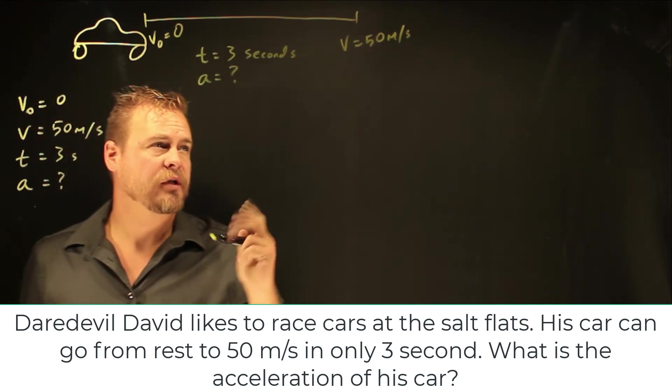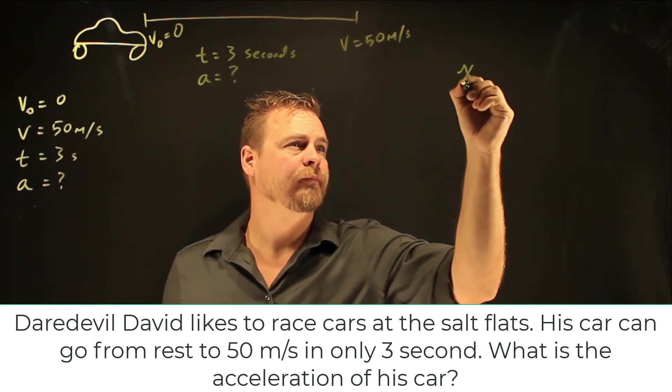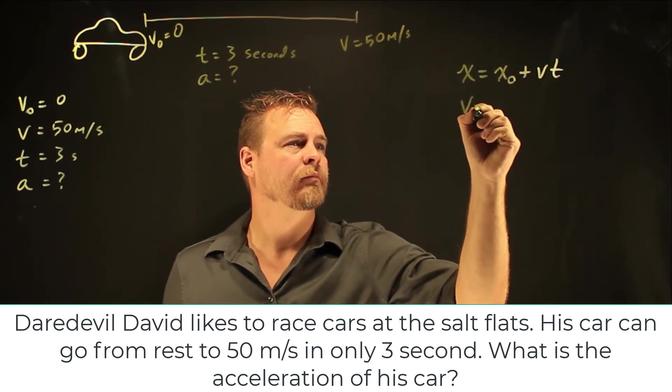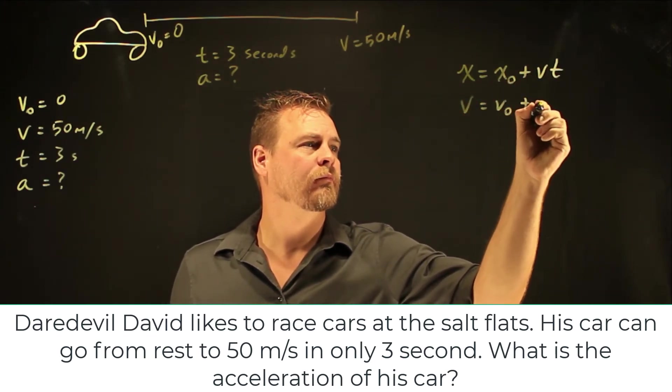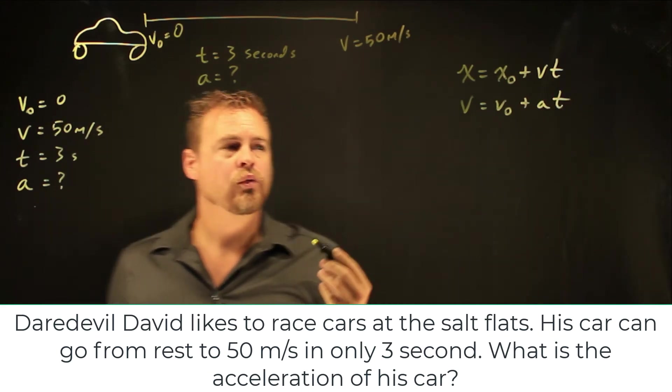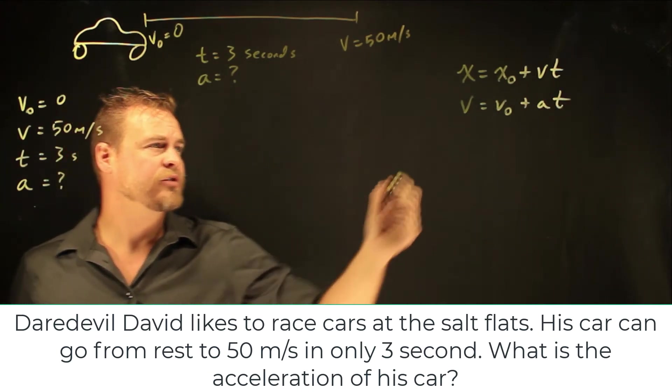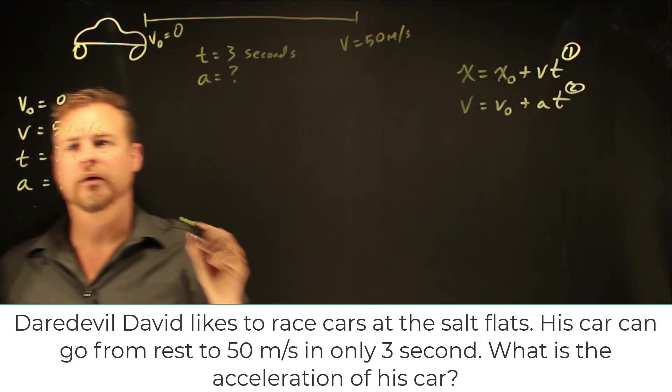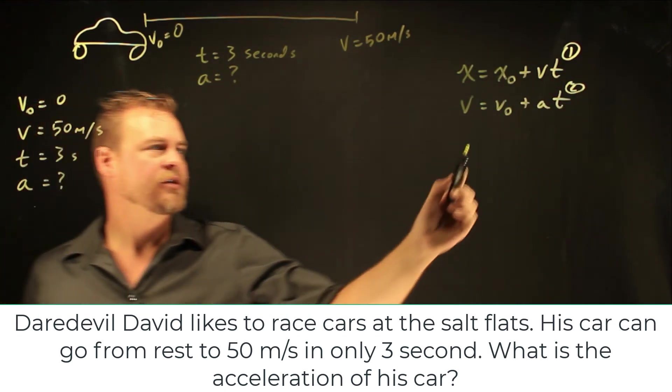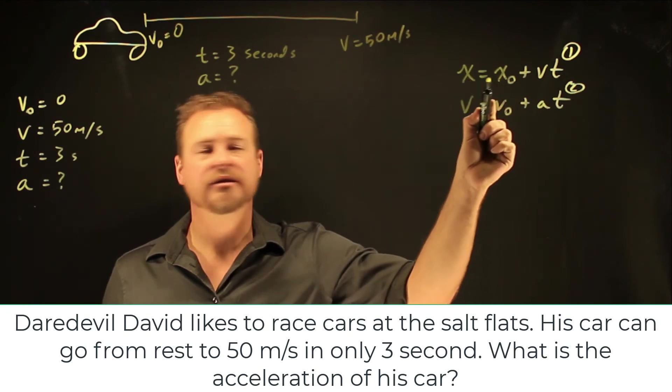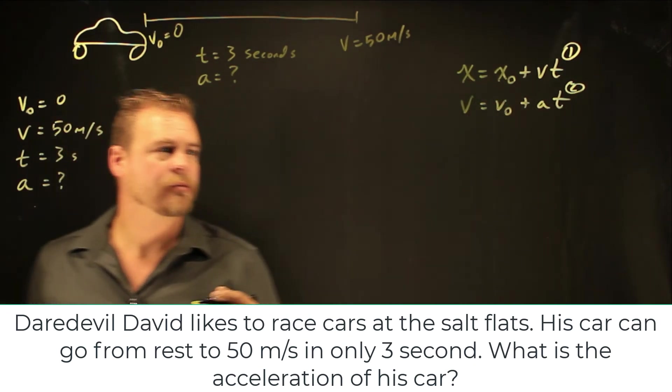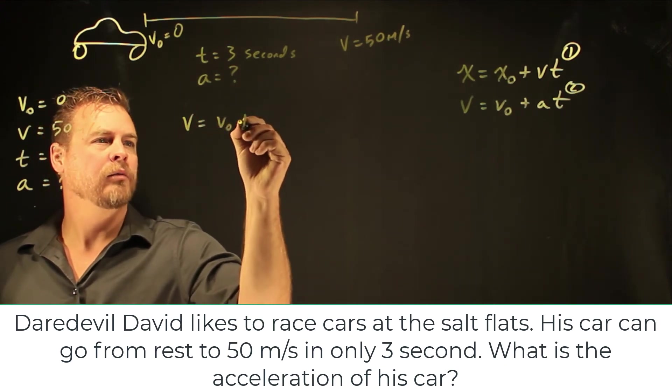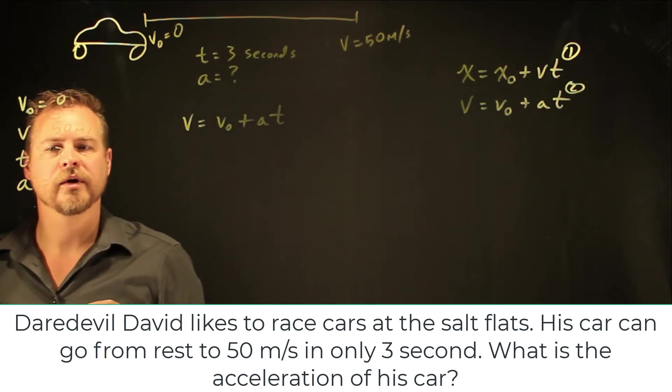Now you have two kinematic equations to choose from. Which one makes the most sense? Equation one or equation two? Well, when you're looking at the different velocities, there's no different velocities in that first equation. So we're going to have to go with the second equation. And so V equals V naught plus AT is my equation.